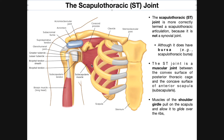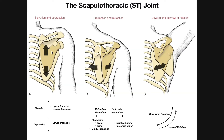How does the scapula move about the surface of the posterior thoracic cage? There are shoulder girdle muscles that move the scapula, as we'll see. Here's a posterior view. The scapula moves against the posterior surface of the thoracic cage. We have elevation and depression — upper trapezius and levator scapulae elevate the scapula, while lower trapezius depresses it. When those shoulder girdle muscles move the scapula, it just moves over the posterior surface of the thoracic cage, and that articulation is the scapulothoracic joint.